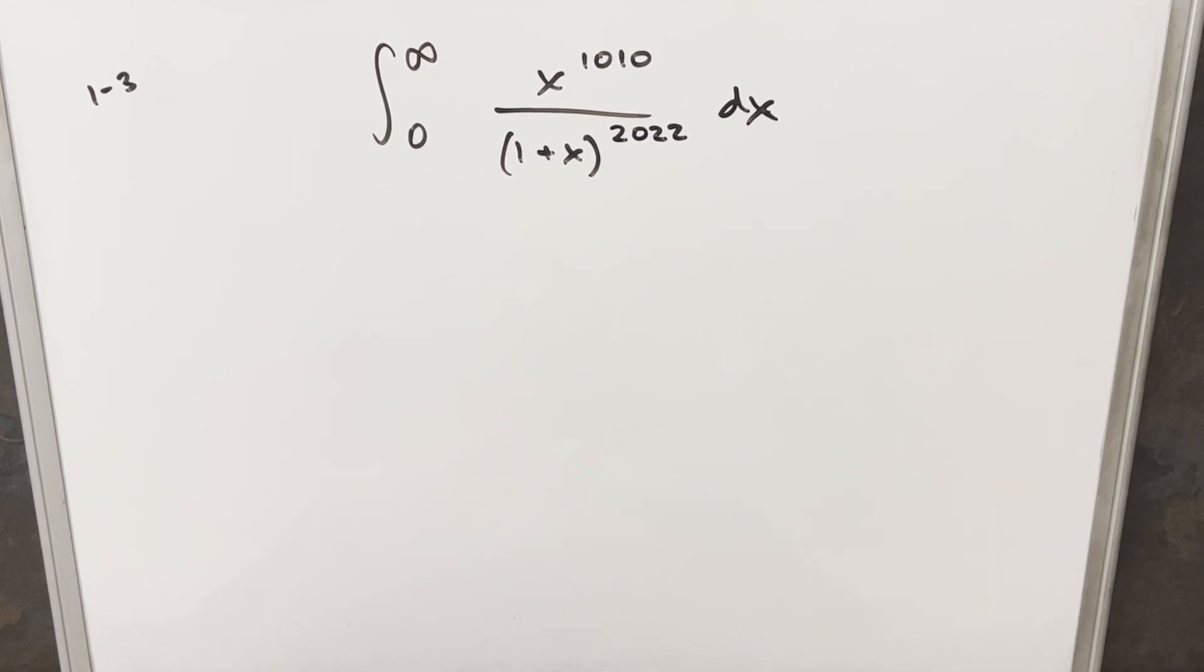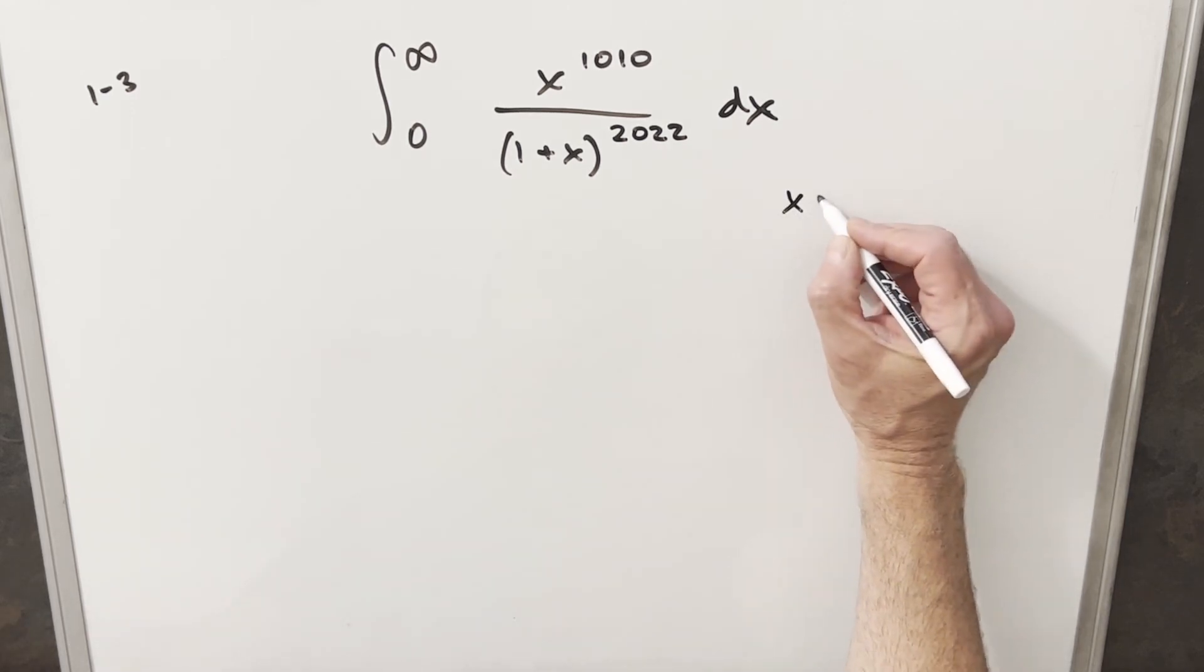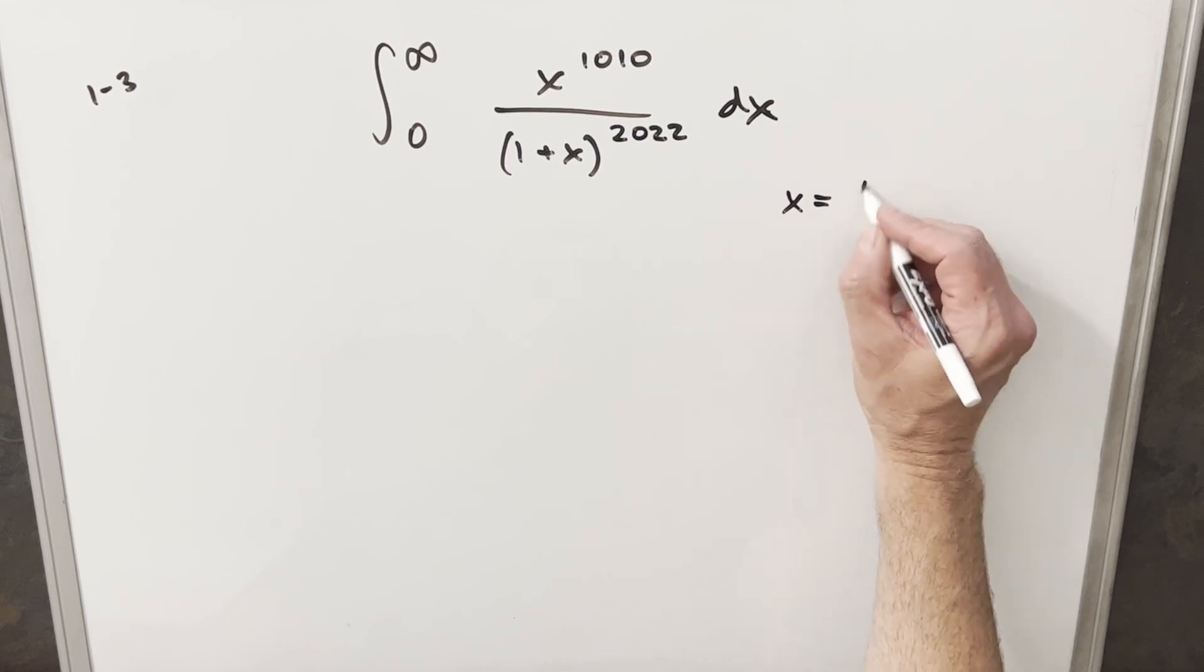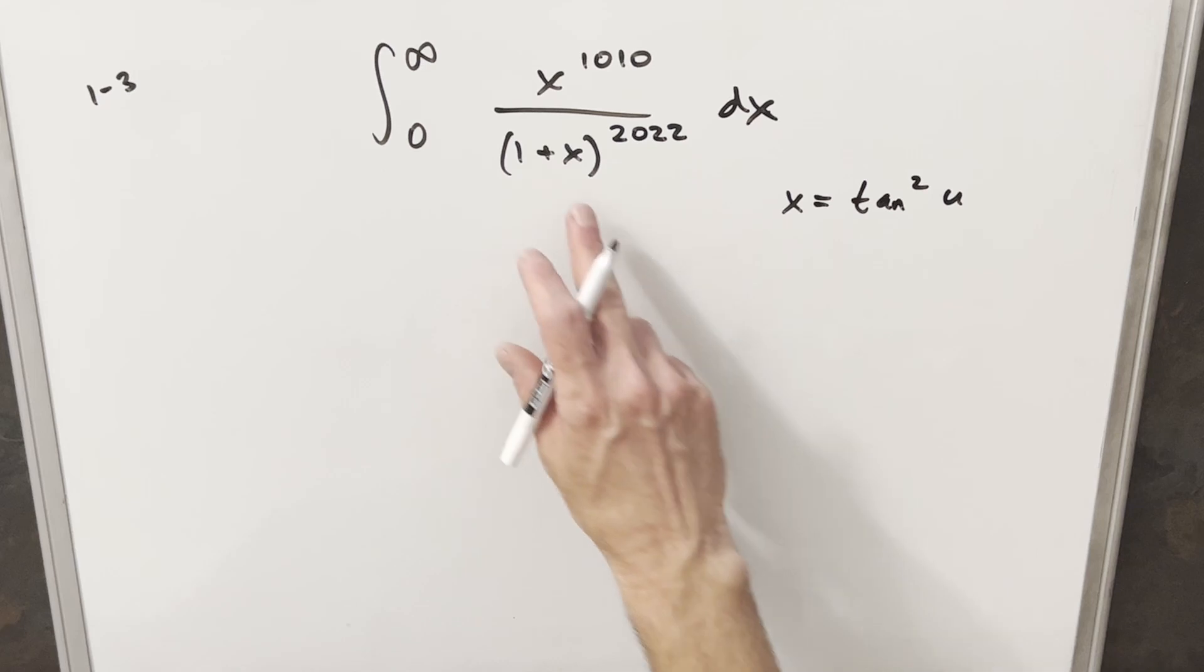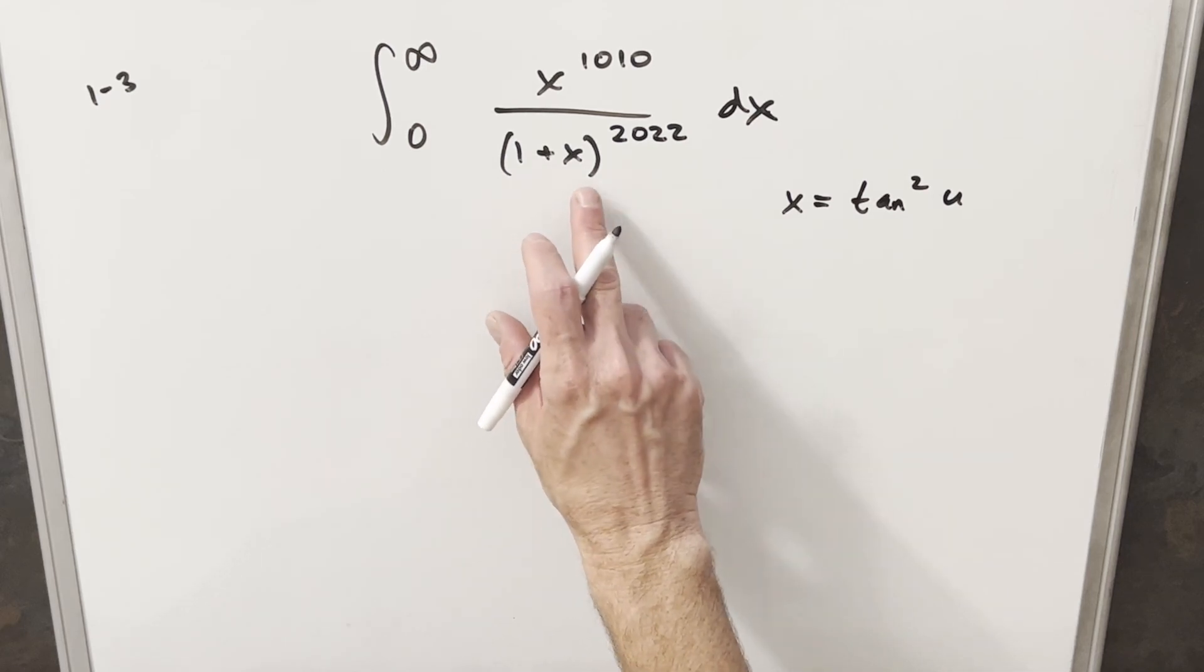So the way I'm going to approach this is try to set this up like a trig substitution. Even though we don't have like 1 plus x squared here, we can make it look that way. If I make my substitution for x equal to tan squared of u, then we'll have the square term that we want in the denominator.